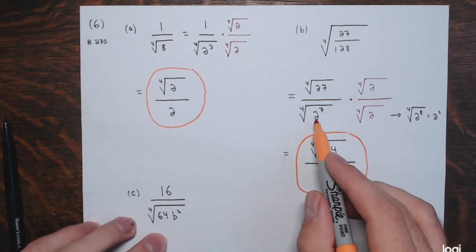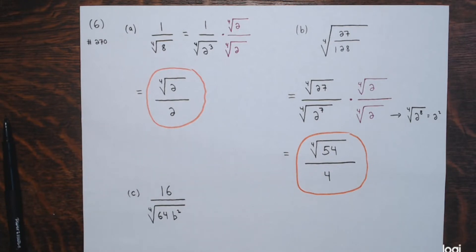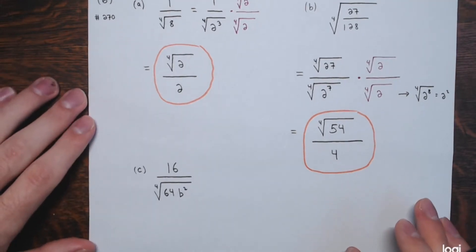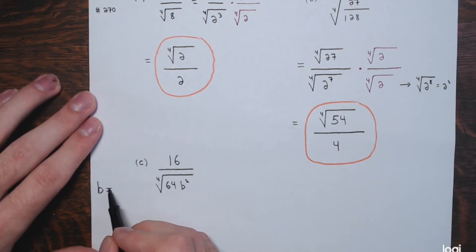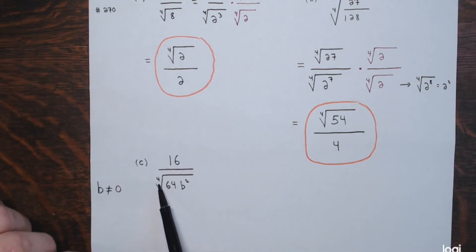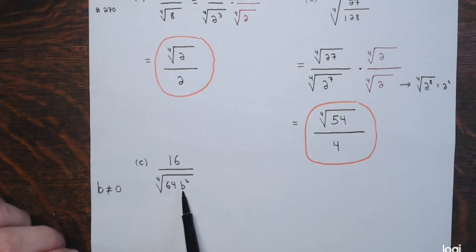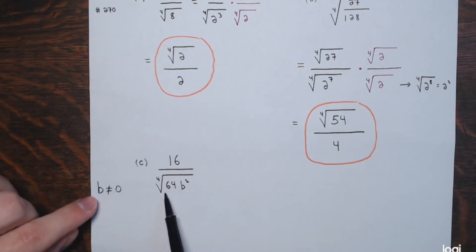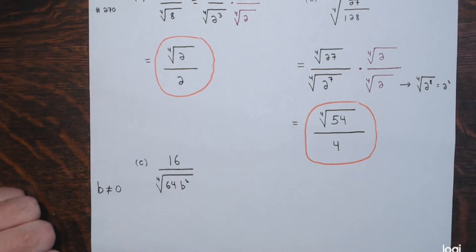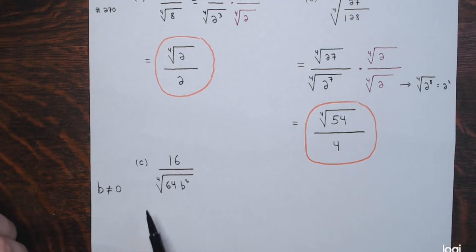Part c: we have 16 divided by the fourth root of 64B squared. Notice that the only value B can't be is 0 — since it's an even root, the radicand can't be negative, but B squared is non-negative whether B is positive or negative. So B can be positive or negative, just not 0. This means I may need to use absolute value symbols when simplifying even roots.